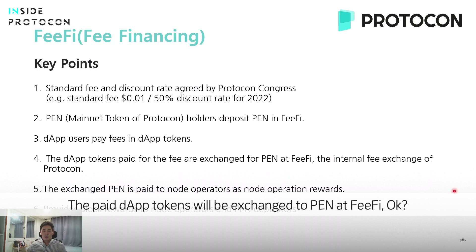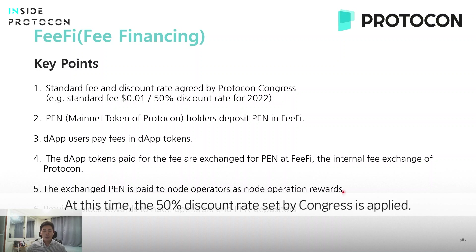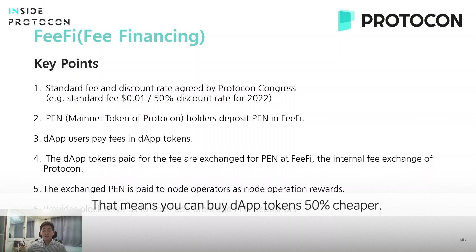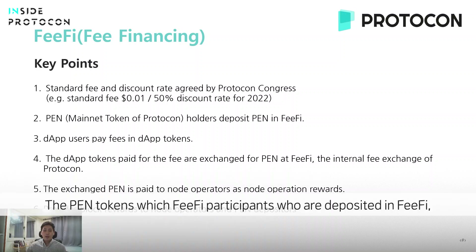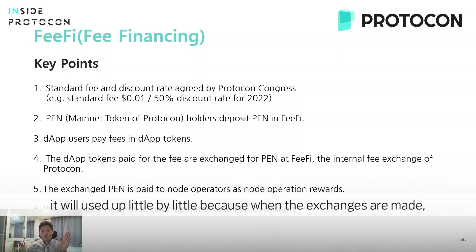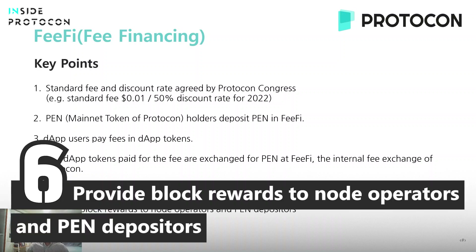In other words, the exchange is made in fee-fi — it's the same as pen holders giving out pen and buying dApp tokens at a discount rate. With the 50% discount rate applied, there is a 50% cheaper price to buy dApp tokens. The exchanged pen is paid to all node operators as node operation rewards. To compensate for the pen used up by fee-fi participants, block rewards will also be distributed to pen depositors.